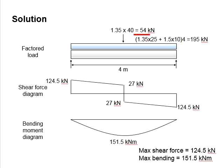The total vertical load, the total UDL multiplied by the 4 meter span, gives you 195 kN.